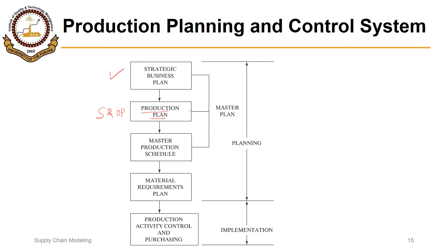As discussed, the production plan focuses on volume while the master production schedule focuses on the mix. In other words, the production plan focuses on the product family as a whole, while the master production schedule focuses on the individual items to be made within that family.